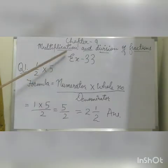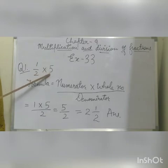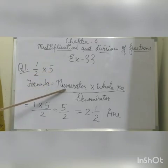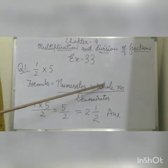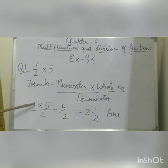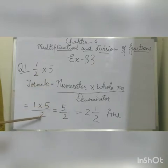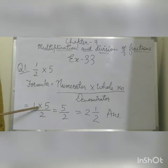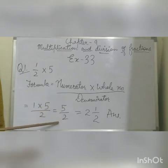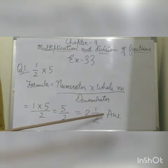Let's start question number 1 of exercise 33, which is 1 upon 2 multiplied by 5. Here, 1 upon 2 is a fraction and 5 is a whole number. Using the formula — numerator multiplied by whole number upon denominator — we put 1 multiplied by 5 upon 2. 1 multiplied by 5 is equal to 5 upon 2, which as a mixed number is 2 and 1/2.